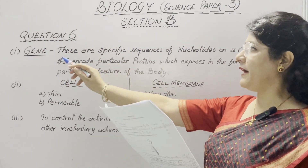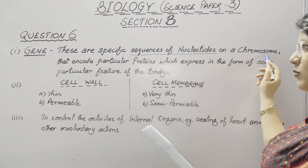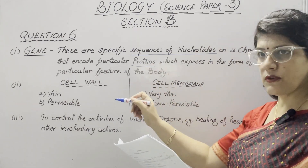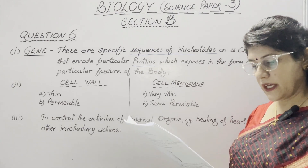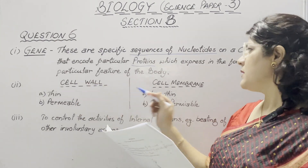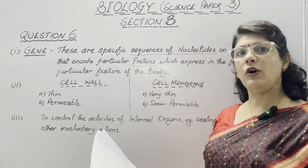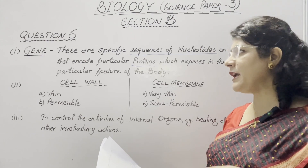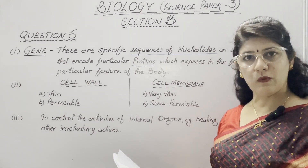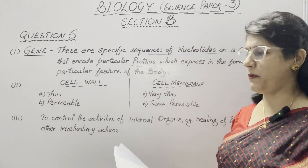In question number 6, part one, define gene. These are specific sequences of nucleotides on a chromosome that encode particular proteins, which express in the form of some particular feature of the body. The second part is to differentiate between cell wall and cell membrane. Cell wall is permeable — it allows water molecules and dissolved substances freely in and out. Cell membrane is semi-permeable, meaning it allows water molecules to pass through but does not allow larger molecules to pass through; it is selectively permeable.